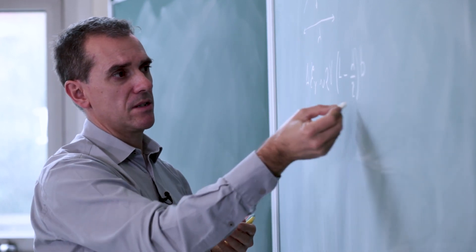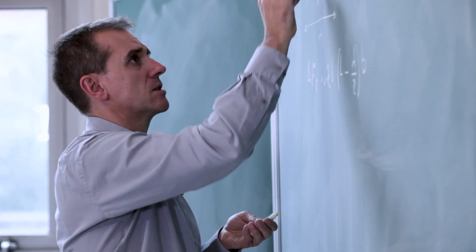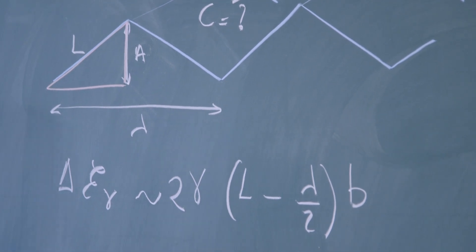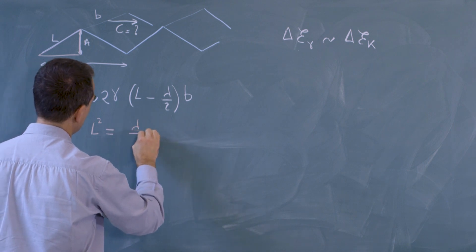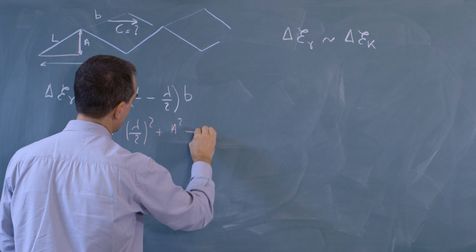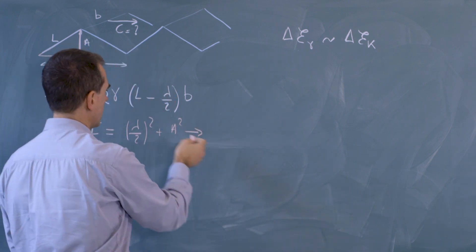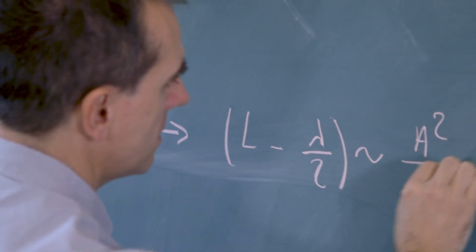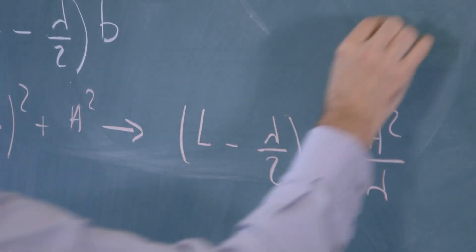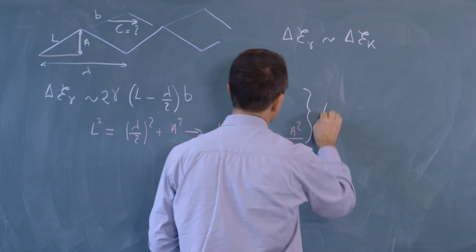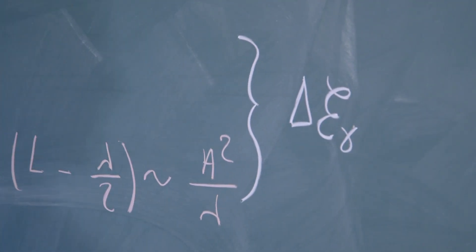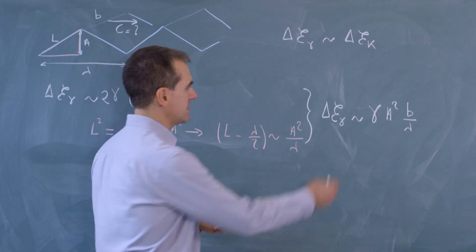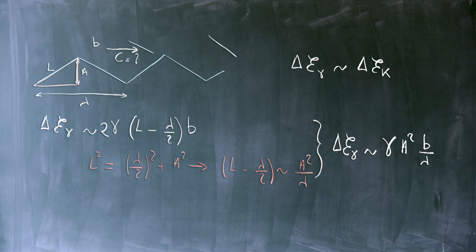Now we need to express this length excess. And so we use Pythagoras in this pink triangle and get that the length squared is equal to lambda over 2 squared plus a squared to deduce the expression that we are looking for, l minus lambda over 2, that will go like the amplitude squared divided by lambda. So when we put these two information together, then we get the expression of the potential energy that we are looking for, that will go like gamma a squared times b divided by lambda. This is the first brick that we need in order to get the expression of the velocity of propagation of capillary waves.